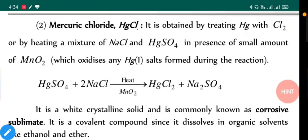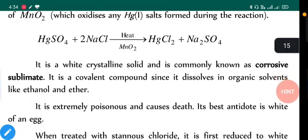Next one, mercury(II) chloride. It is obtained by heating mercury with Cl₂ or by heating with NaCl and HgSO₄ in presence of small amount of MnO₂, which oxidizes Hg(I) salt forming during the reaction. HgSO₄, that means it is in +2 oxidation state, with NaCl gives HgCl₂ and Na₂SO₄. It is white crystalline solid and is commonly known as corrosive sublimate.